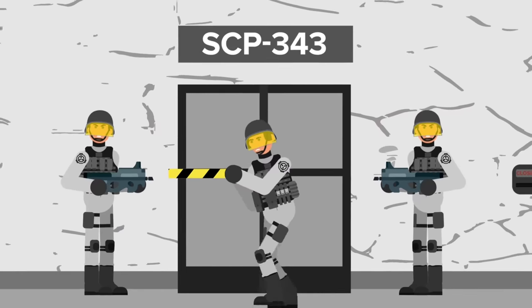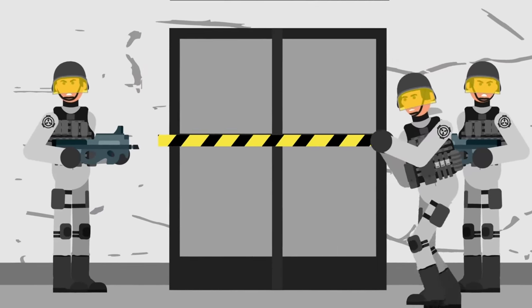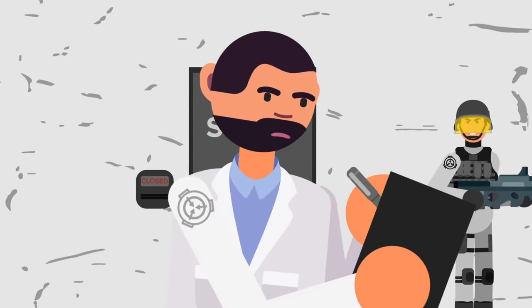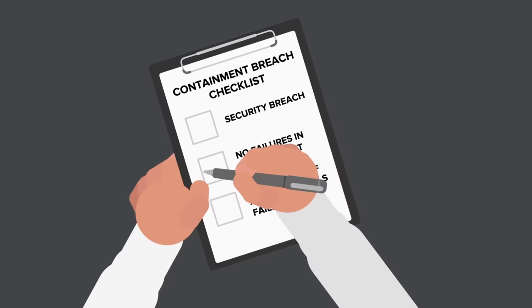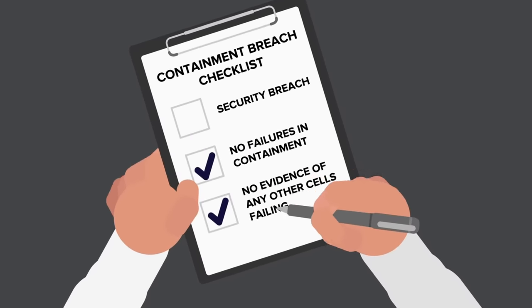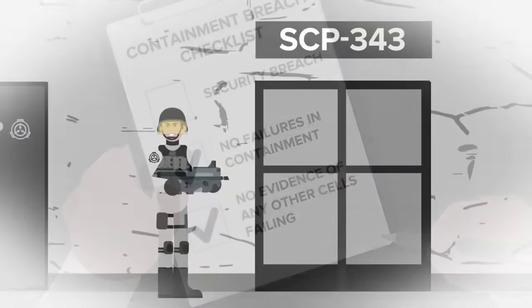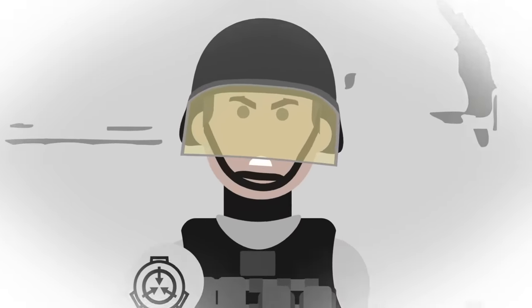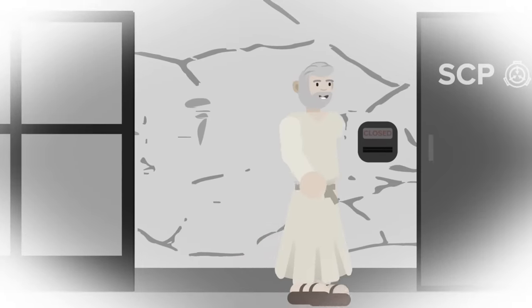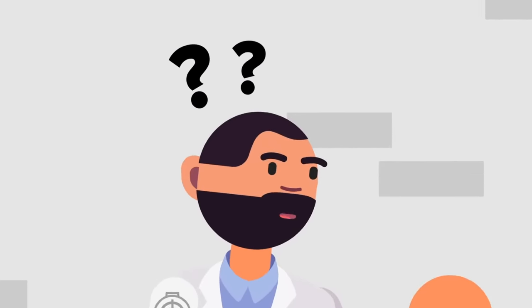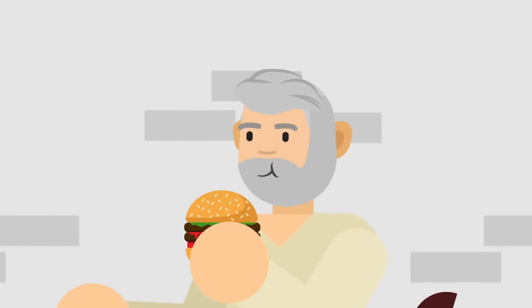The facility quickly went on lockdown, and a full investigation was done into how SCP-343 breached containment. But there was no evidence of any security breach, no failures in containment. SCP-343 hadn't broken through the security, he had just ignored it, as if it wasn't there at all. When questioned about his hamburger run, he simply repeated his belief that he was God.